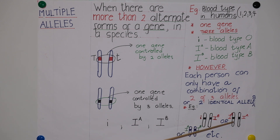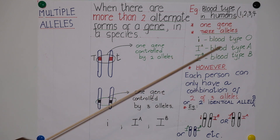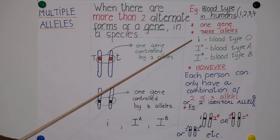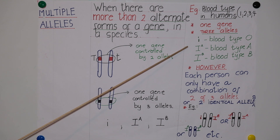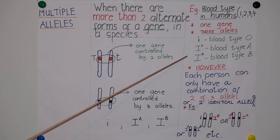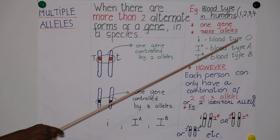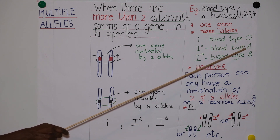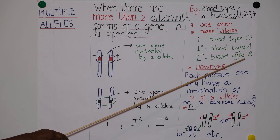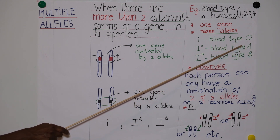A person can have capital I superscript B coding for blood type B, or a person can have both alleles coding for blood type A. Four: the different combinations of these three alleles result in four different blood groups — blood type O, blood type A, blood type B, and blood type AB.